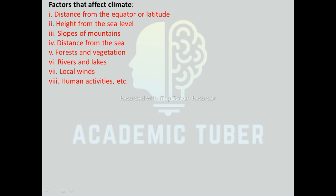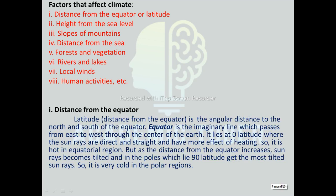The major factors that affect the climate of a place are: distance from the equator or latitude, height from the sea level, slope of mountains, distance from the sea, forest and vegetation, rivers and lakes, local winds, human activities, etc. Latitude is the angular distance to the north and south of the equator. The equator is the imaginary line which passes from east to west at the center of Earth. It lies at zero degree latitude, where sun rays are direct and have more heating effect, so it is hot in the equatorial region. But as the distance from the equator increases, sun rays become more tilted, and the poles at 90 degree latitude get the most tilted sun rays, so it is very cold in polar regions.